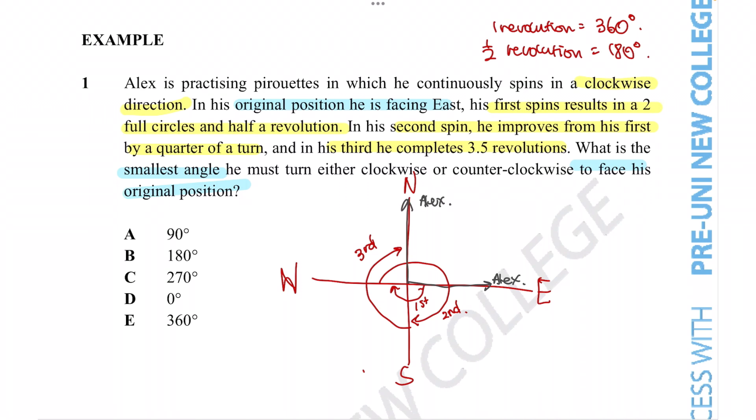The question was, in what direction does he need to turn to face his original direction? If he's facing north after all his spinning and he was originally facing east, it's quite clear that the closest or smallest angle is going to be this one. That is exactly 90 degrees. Since each of the four quadrants of the revolution splits up exactly into 90, the correct answer is option A.